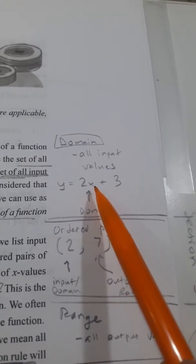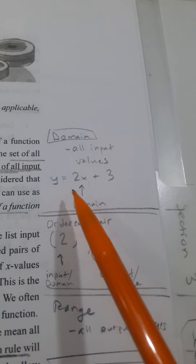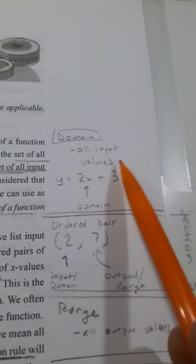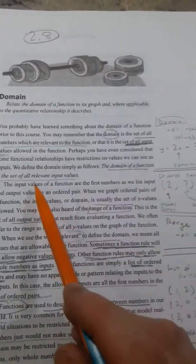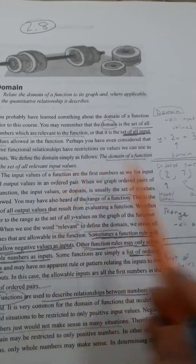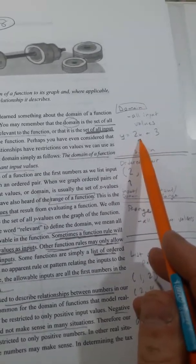Remember what we put in for x. When x is 1, what is y equal? So the domain is all input values. And that's what it says here. The domain of a function is the set of all relevant input values. It's all numbers we could put in for x.